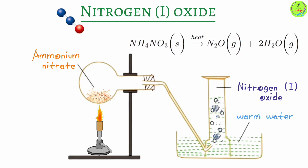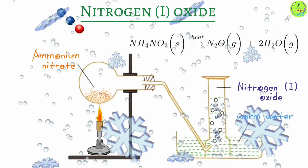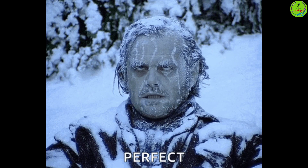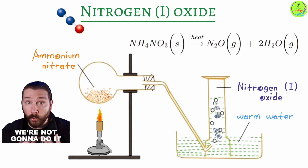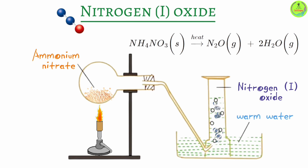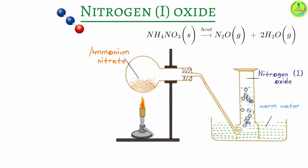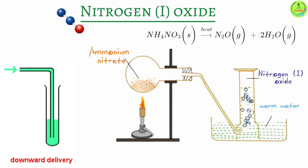Nitrogen one oxide is very unique in its solubility — it is fairly soluble in cold water but less so in hot water. Cold water here refers to water at room temperature. When nitrogen one oxide contacts water at room temperature it dissolves, so you would end up with a solution rather than a gas. Therefore, warm water is used for collection because nitrogen one oxide is only slightly soluble in warm water.